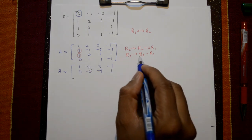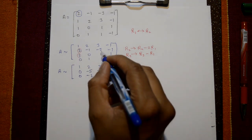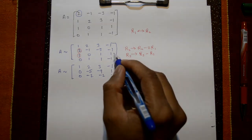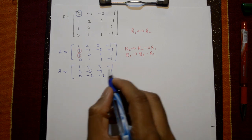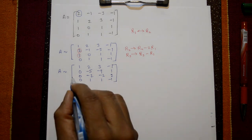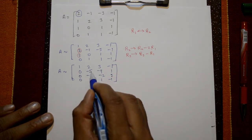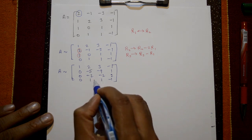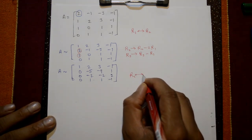Third row R3 = R3 - R1 gives: 0, -2, -2, 2. Fourth row is unchanged. Now looking at the second column, the leading number should be 1, so we interchange R2 and R4.